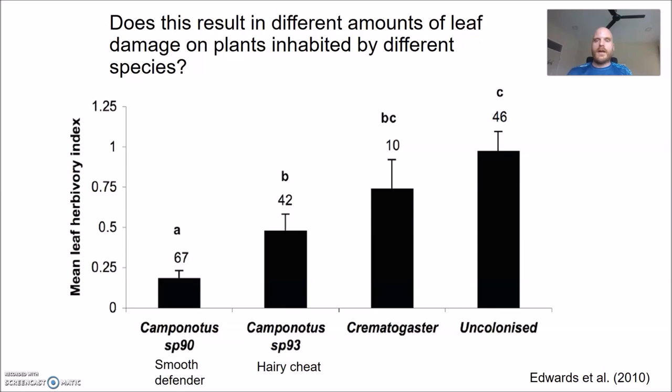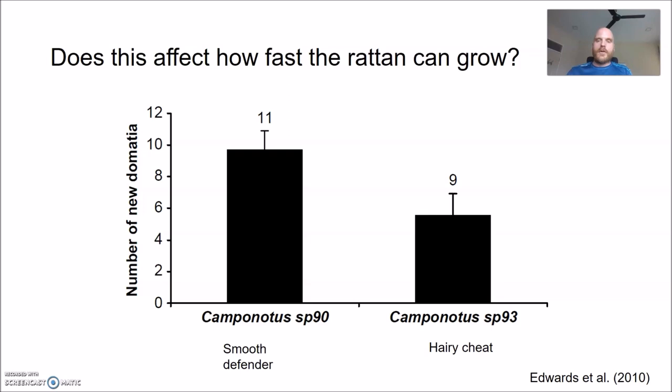We then asked whether these differences in patrolling affect leaf damage. Indeed, looking at how much leaf area is removed by herbivores: for the smooth defender it's not very much; for the hairy cheat, a bit more. But for Crematogaster and for uncolonized plants it's even more — significantly more for uncolonized plants. So perhaps the hairy cheat isn't really a cheat, just a bit lazy. If you're inhabited by the hairy cheat, you're suffering an opportunity cost of not having the smooth defender, but it's still better than being completely uncolonized.